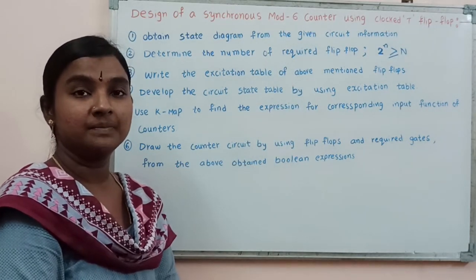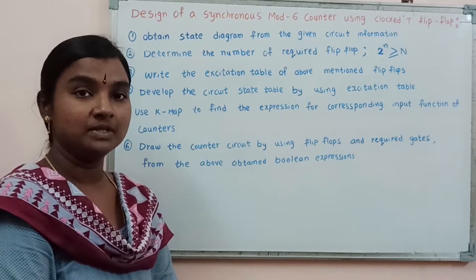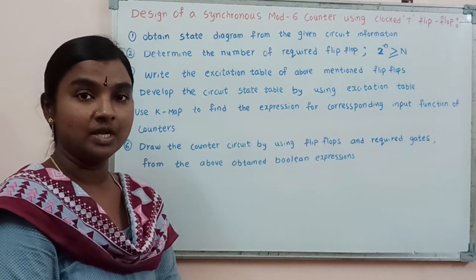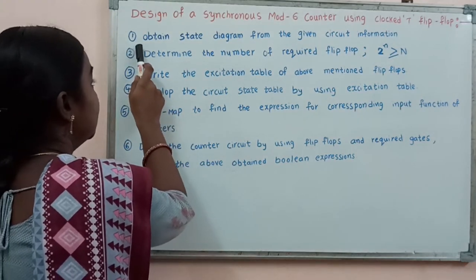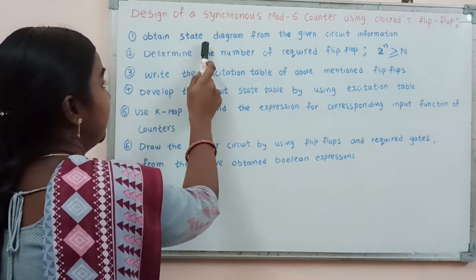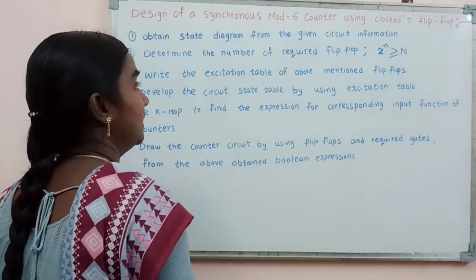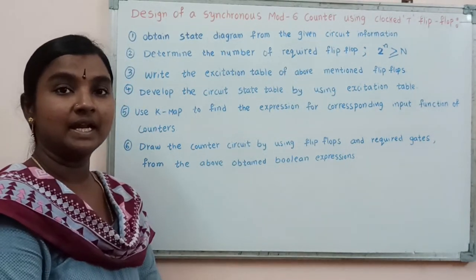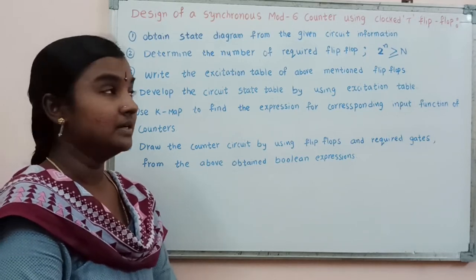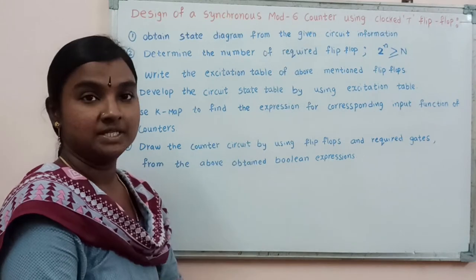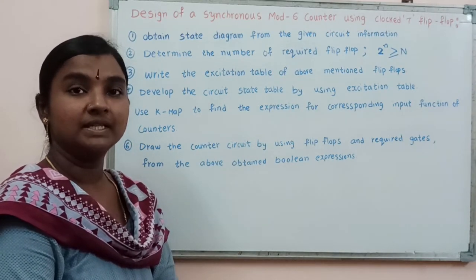Mod 6 means the number 6 indicates the number of states in the synchronous counter. The first step is to obtain the state diagram from the given circuit information. This state diagram will consist of 6 number of states, since the modulus number indicates the number of states in the state diagram.